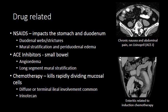ACE inhibitors can also impact the small bowel, causing angioedema that manifests as long segment mural stratification. This often presents with chronic or recurrent nausea or abdominal pain, and it's easy to overlook the fact that the patient is on an ACE inhibitor such as lisinopril — making this a commonly misdiagnosed or underdiagnosed etiology of chronic small bowel inflammation.